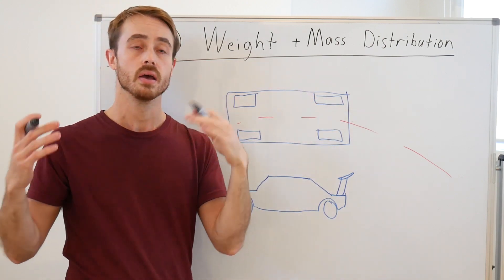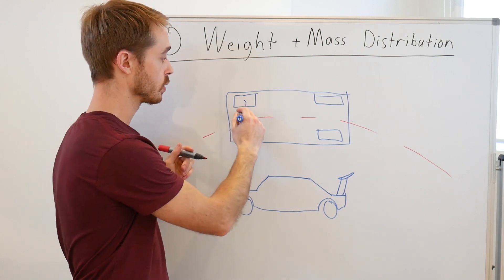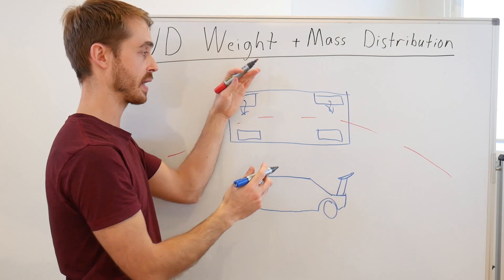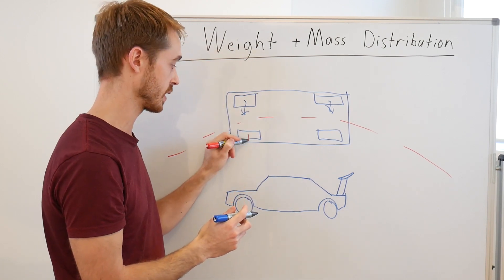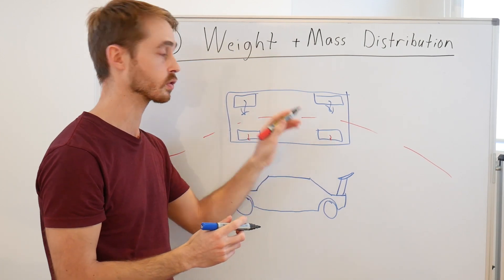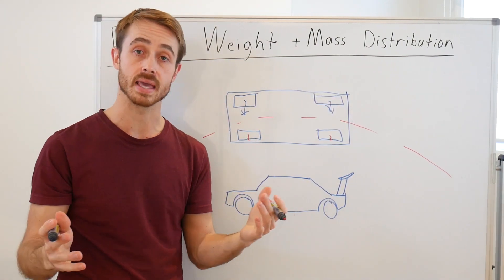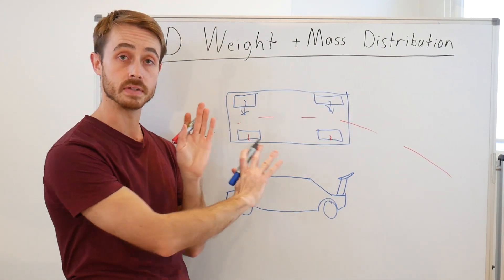We're going to have even grip load on all of our tires front to back, so our outside tires will take more of the grip, the inside tires will take a little bit less of the grip because of the weight transfer, and so we'll end up with even grip allocation.